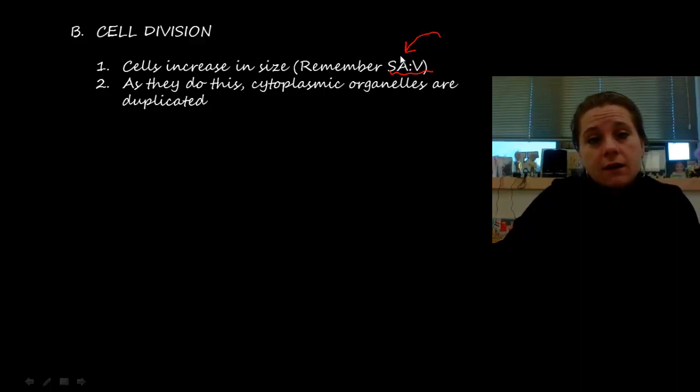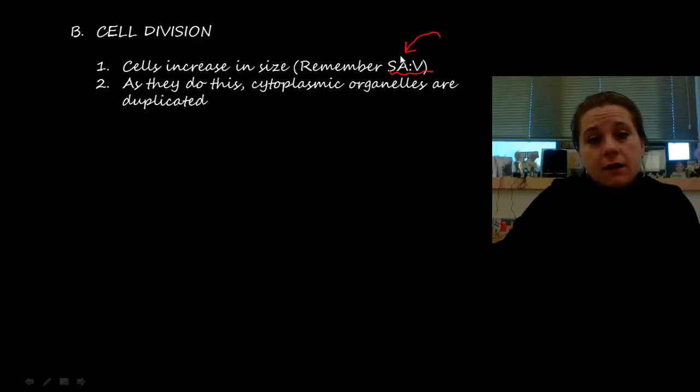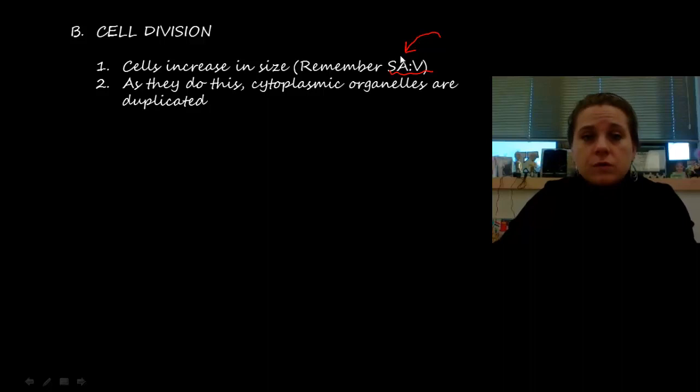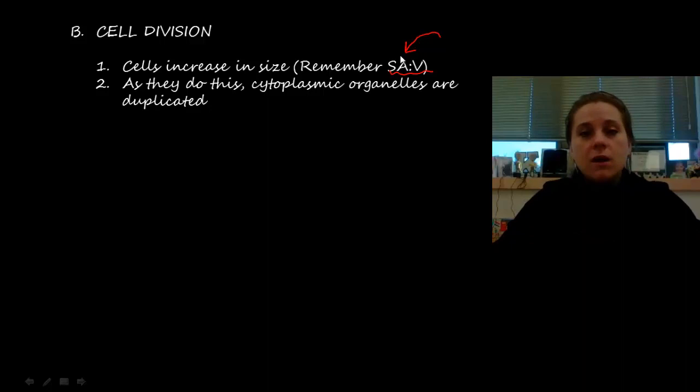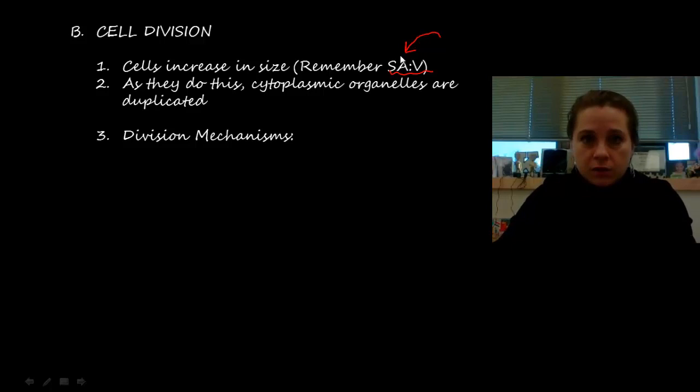Before cells divide, they have to make sure the new cells will have all the correct materials and everything they need to live. So before this process happens, everything needs to double up so that when the cell divides, each new cell has what it needs.